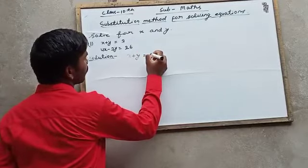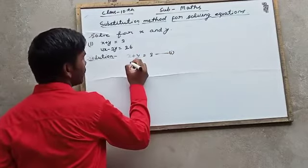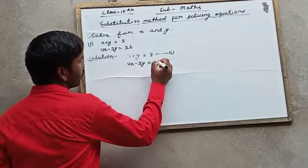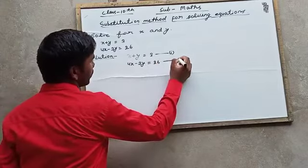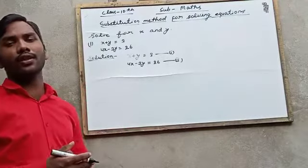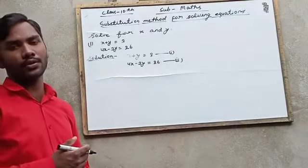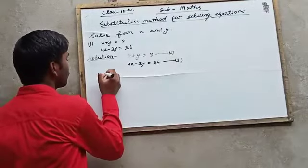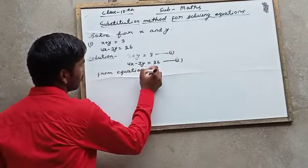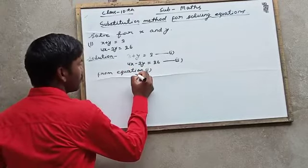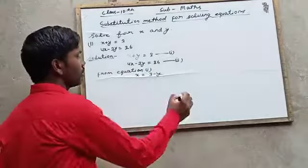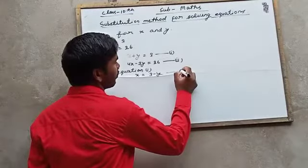x plus y is equal to 3, equation number one, and 4x minus 3y is equal to 26, equation number two. From any equation we will change one variable in the form of another variable. So from equation one, x is equal to 3 minus y. This you can put equation number three.